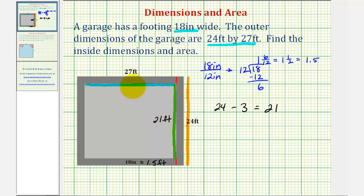And now to find the length of the other side, we have to take 27 feet and subtract 1.5 for this length and 1.5 feet for this length. So that would be 27 minus 1.5 twice or minus three, which would be 24. So the inner length here would be 24 feet.